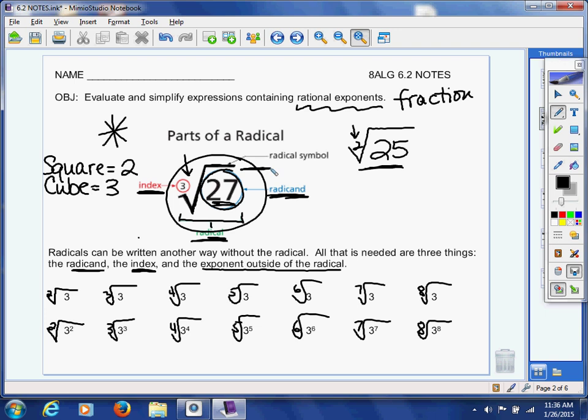Now, what I did down here at the bottom of your page is I wrote several radicals here. I did the square root of 3, the cube root of 3, the 4th root of 3, 5th root of 3, 6th root of 3, 7th root of 3, and so on. I wanted to show you how radicals can be written another way, totally removing the radical altogether. All that means is the number underneath is being raised to a fraction exponent.